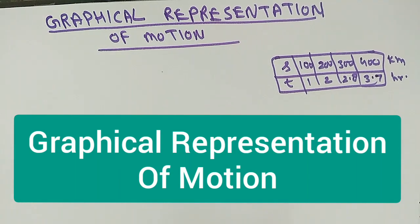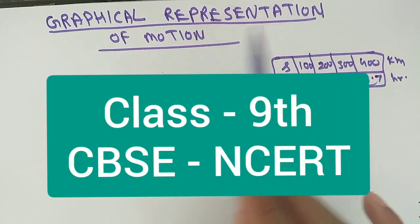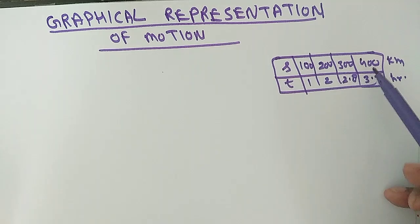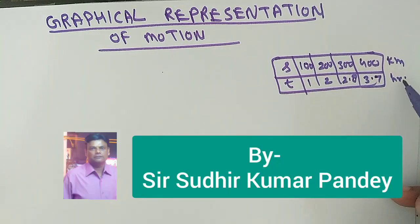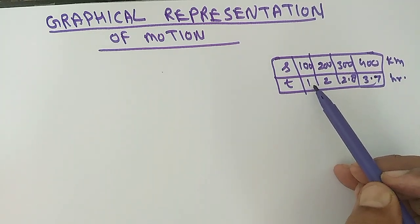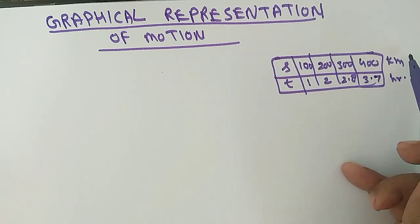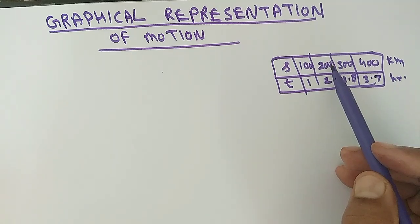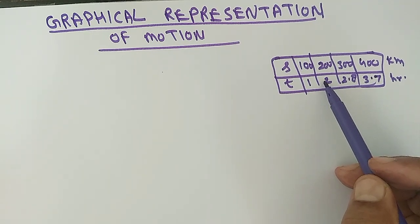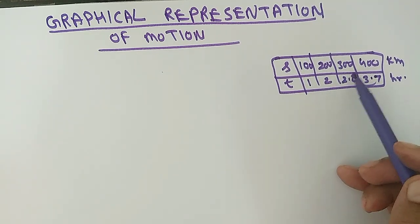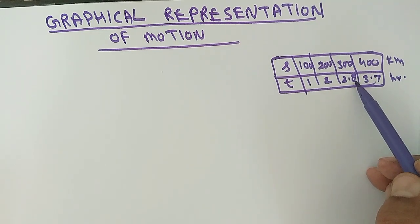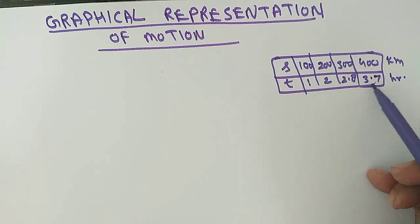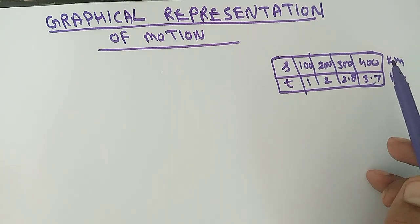Hello students of Class 9. In this video we'll discuss graphical representation of motion. If we use a table, it's easy for simple values — for example, distance covered in one hour is 100 km, in two hours is 200 km. But if someone asks the distance covered in 1.3 hours or three hours, the table can't answer clearly. With the help of a graph, the calculation becomes very easy.